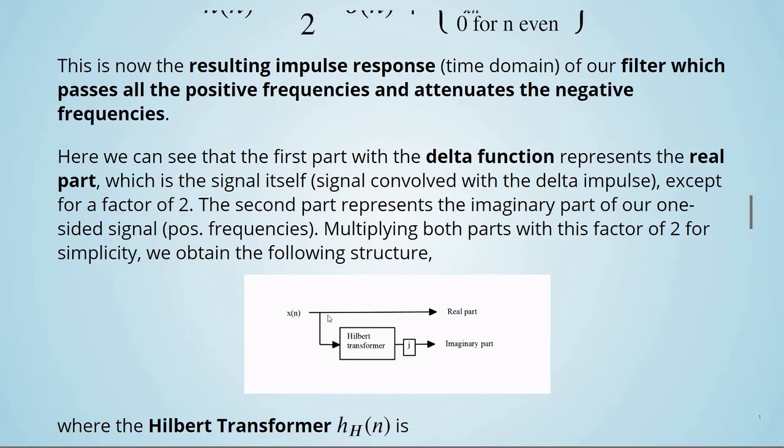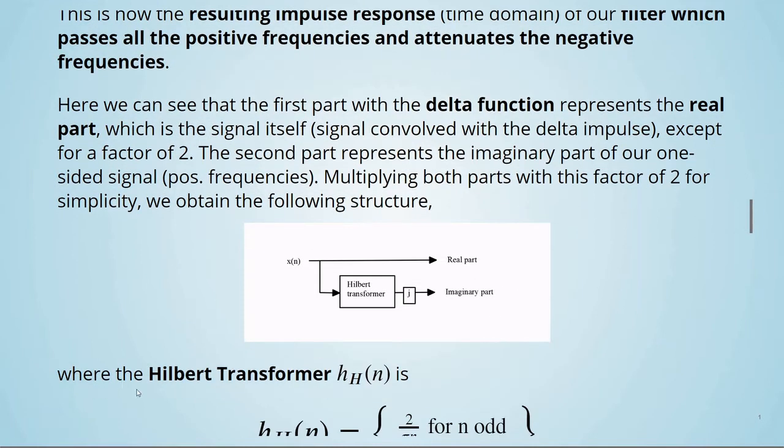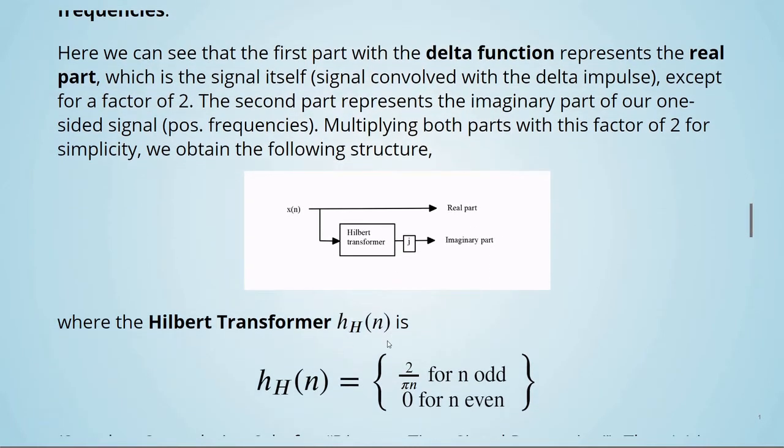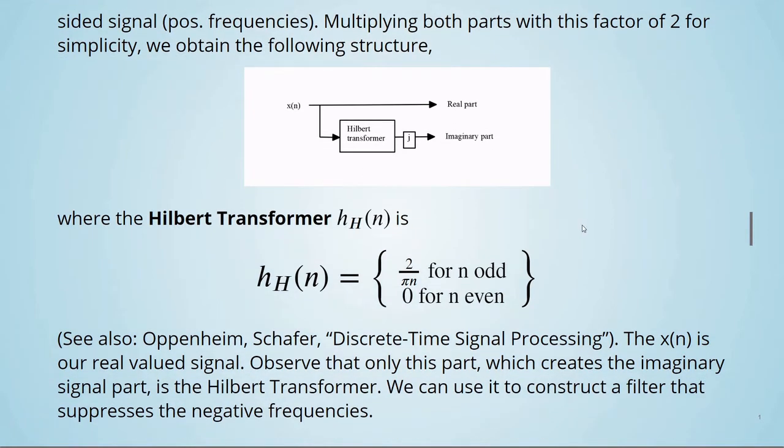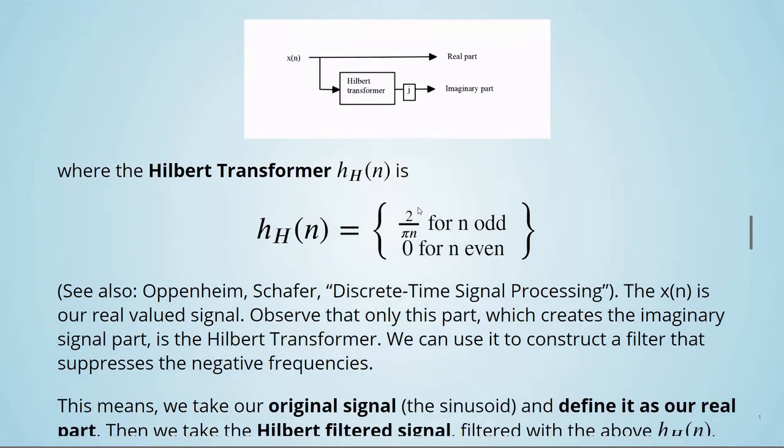So, x real part, x, the Hilbert transform, j, the imaginary part, where the Hilbert transformer, h_h, is given by these equations here: 2 divided by π times n for n odd and 0 for n even. You can also refer to the book Discrete Time Signal Processing by Oppenheim and Schafer. The x(n) is our real-valued signal. Observe that only this part which creates the imaginary signal part is the Hilbert transformer. We can use it to construct a filter that suppresses the negative frequencies.